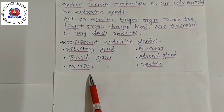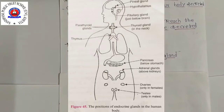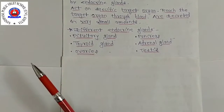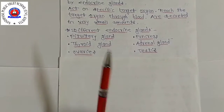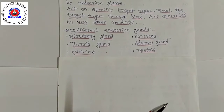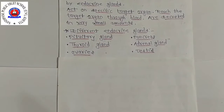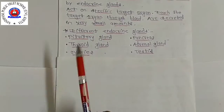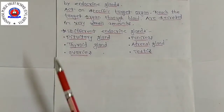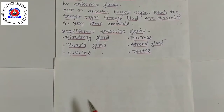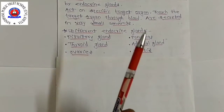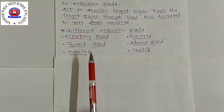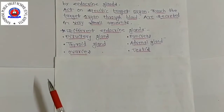Ovaries are the glands present only in females. They produce two female sex hormones called estrogen and progesterone. Estrogen controls the development of female sex organs and female features such as feminine voice, soft skin, and mammary glands. All these changes caused by estrogen are associated with female puberty, which girls attain at the age of 10 to 12 years. Progesterone controls the uterus changes in the menstrual cycle and helps in the maintenance of pregnancy. The ovaries also make the female gamete called ova.